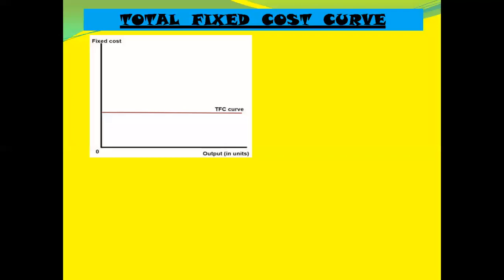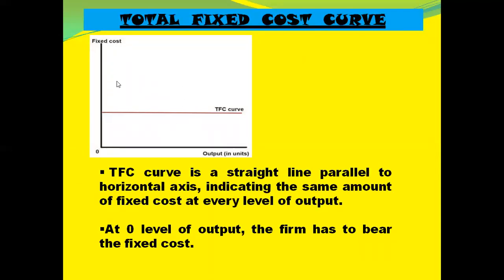Now we come to the total fixed cost curve. We measure output on the horizontal axis and TFC on the vertical axis. TFC curve is a straight line parallel to the horizontal axis — TFC is 60 in our table. At any level of output TFC remains the same, indicating the same amount of fixed cost at every output level. At zero level of output TFC is positive, because even if the firm does not start production it has to incur total fixed cost.